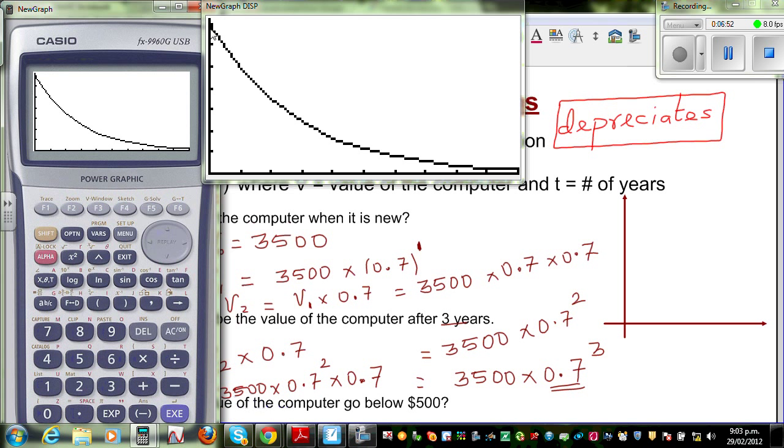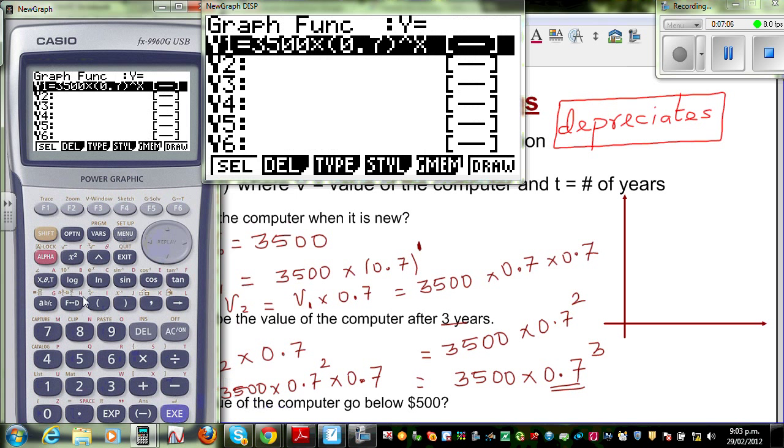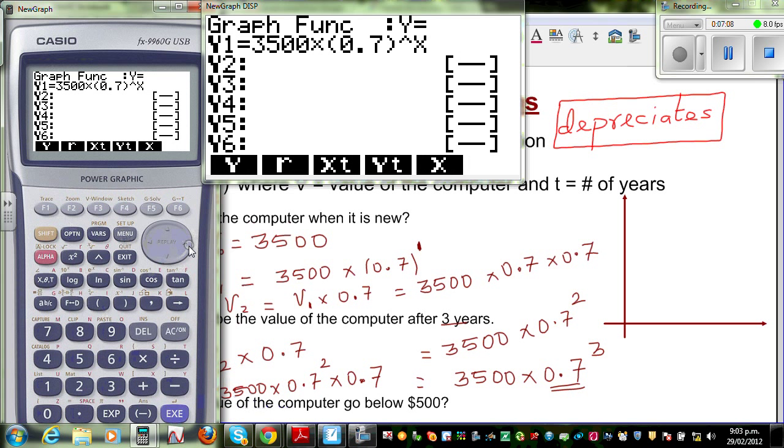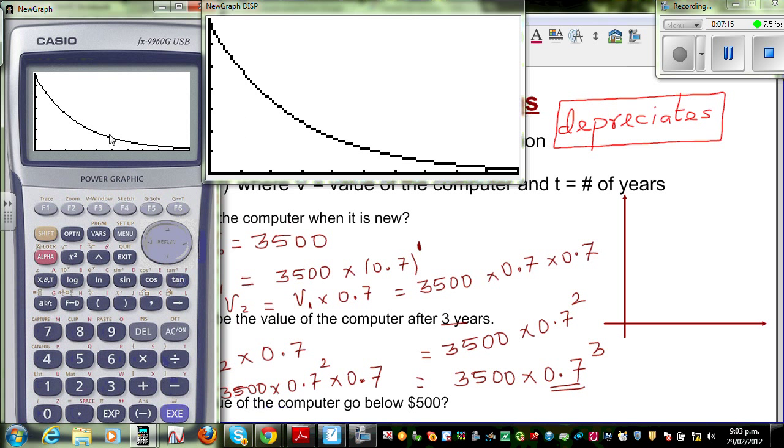So, when it is 0, it is 3500. And the value goes down, and almost becomes 0, after a number of years. Now, you go to your graph menu, to do these questions. So, I will have to scroll like this. And then go, and draw a graph. So, this is your graph.